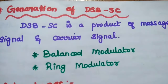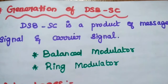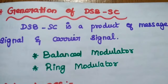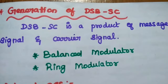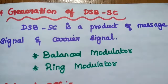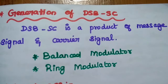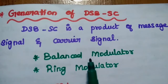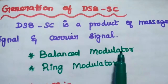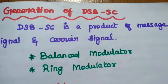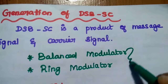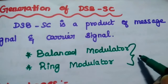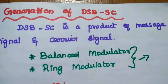The next important topic is the generation of double sideband suppressed carrier signals. Since DSB-SC is a product of the message signal and carrier signal, this signal can be generated using a balanced modulator and a ring modulator. These will be discussed in detail in the next video.